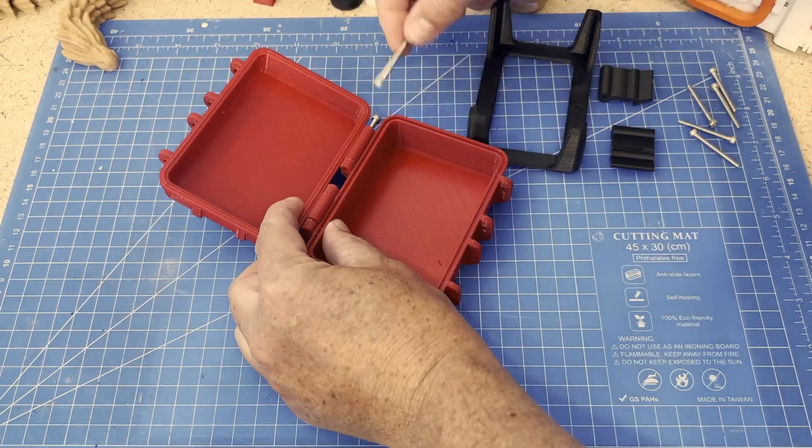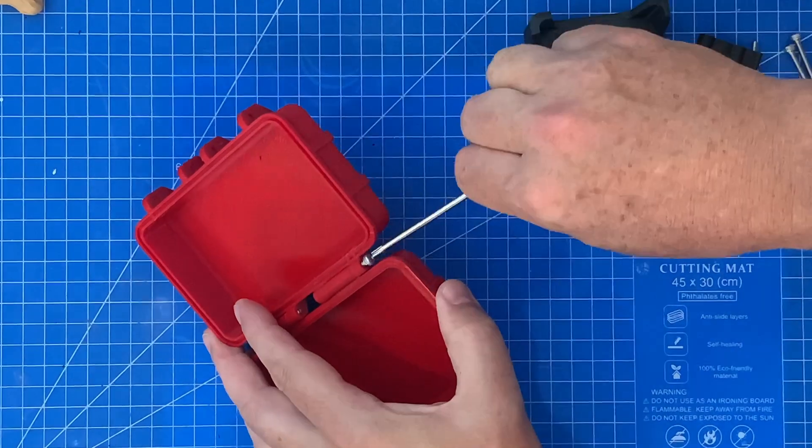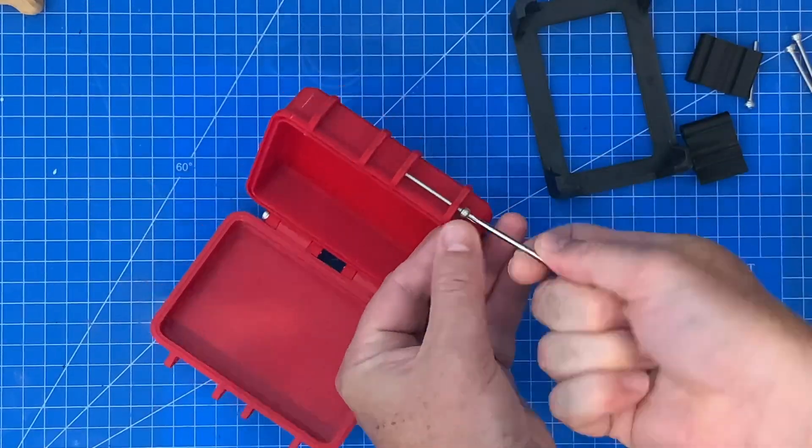With everything printed, it was time to assemble. The only problem I have with the assembly on this one was that it needed extra hardware. In this model, it's six M3 30mm bolts.